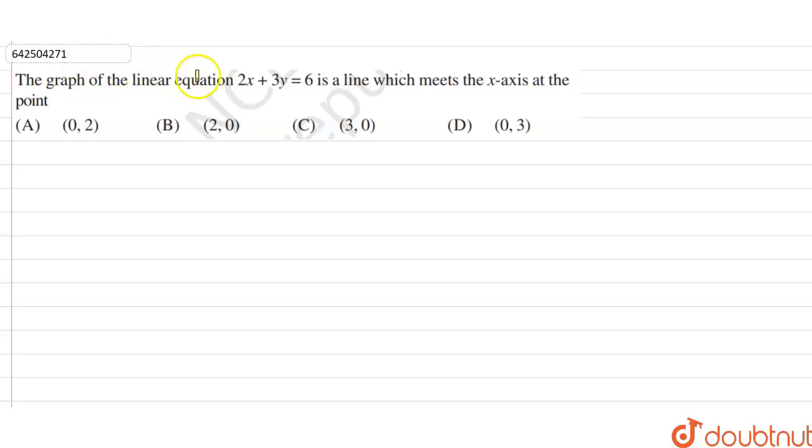Hi students, our question is the graph of the linear equation 2x plus 3y is equal to 6 is a line which meets the x-axis at the point.